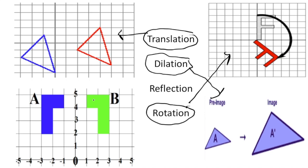Last but not least, we have an image that looks like it's being reflected across the y-axis, so this is a reflection. Now try the practice problems on your own. Pause the video and once you're done hit play to see how you did. Good luck!